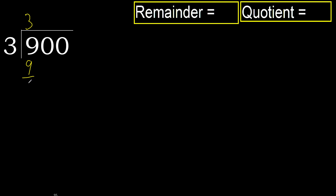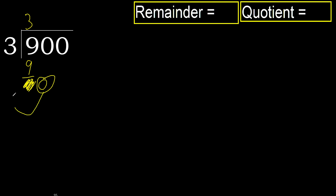9 minus 9 is 0. Next, eliminate 0 on this side. 0, but 0 is less, therefore next.